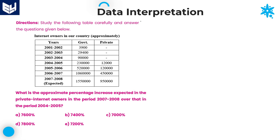Hi everyone, welcome to the session. In this session, I will continue tablet data interpretation. First of all, we need to read the information which is provided in the question. Study the following table carefully and answer the questions given below. The information is given about internet owners in our country approximately, in different years.